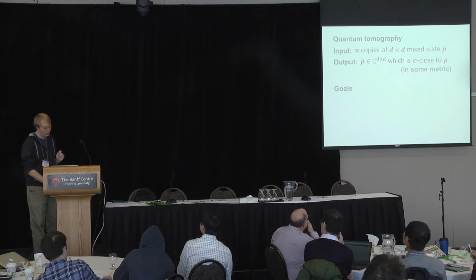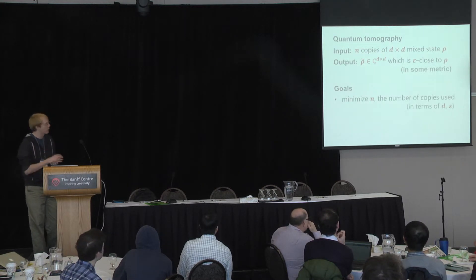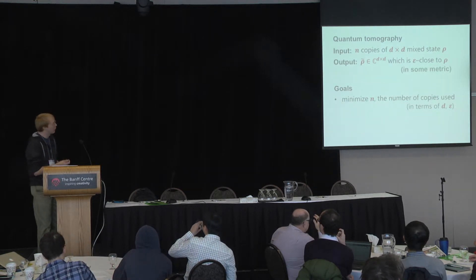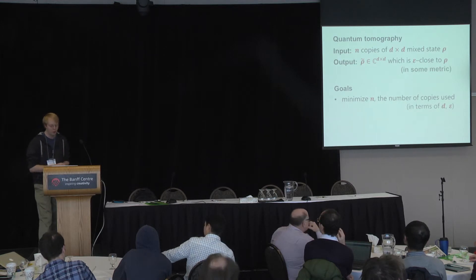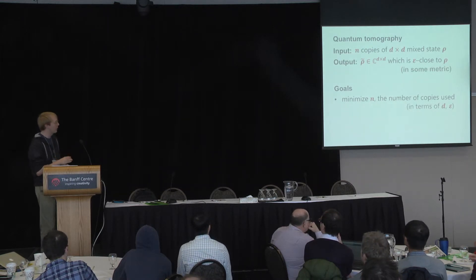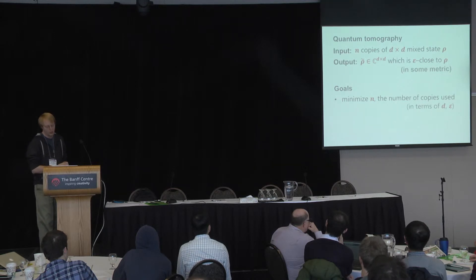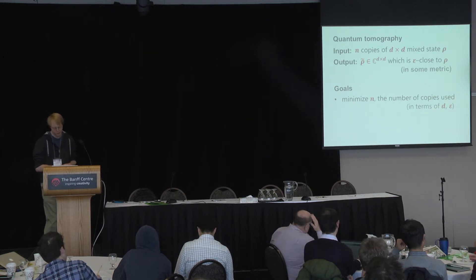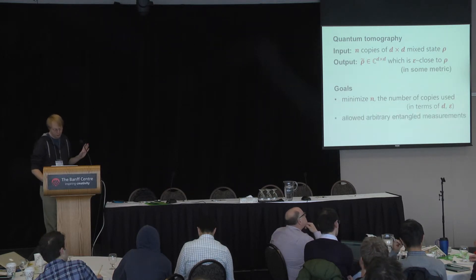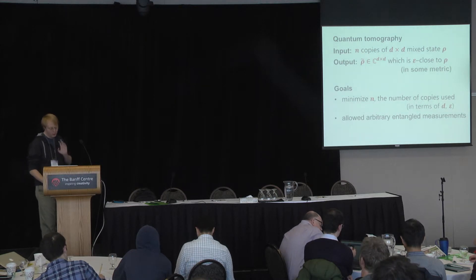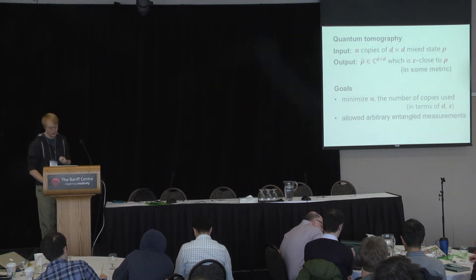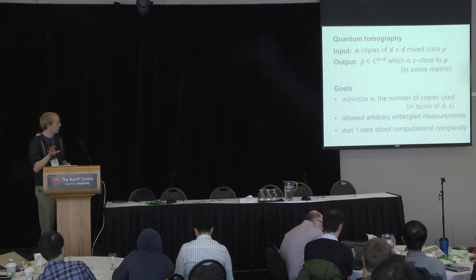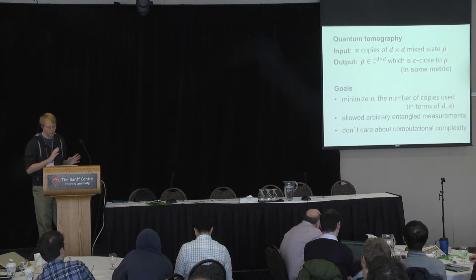Let me tell you about the goals we had in these two papers. We are imagining the scenario when the device is a very expensive operation to run, so every time you produce a copy of the state, it's somewhat expensive. When you solve this problem, you want to minimize n — the number of copies you use — in particular in terms of d, the dimensionality, and epsilon, your error parameter. For our setting, I'm going to be extremely nice to the algorithm: I'll allow it arbitrary entangled measurements, as complex as it wants. I don't care about computational complexity at all — it can run as long as it wants. All I care about is minimizing the number of copies used.